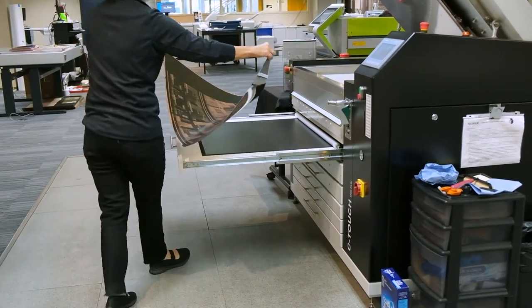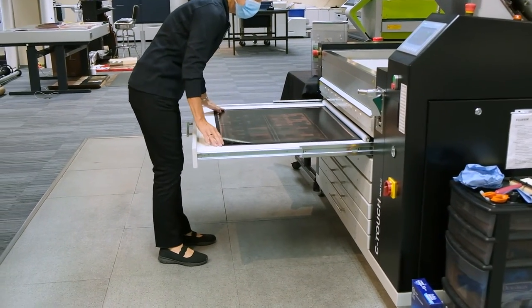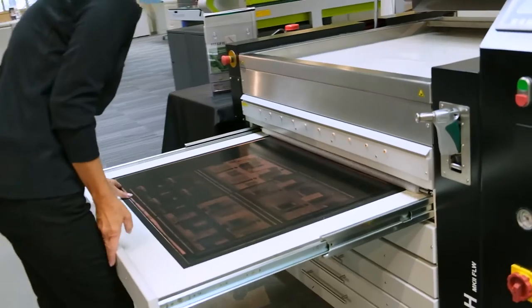The plate is carried to the C-Touch for a main exposure to lock the polymers in place in the top drawer.